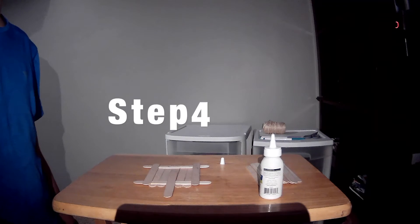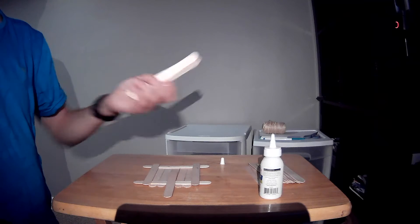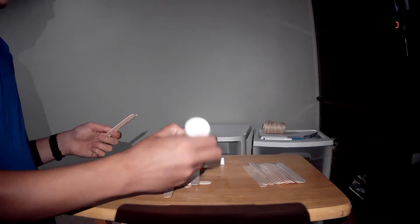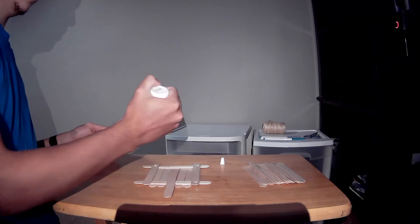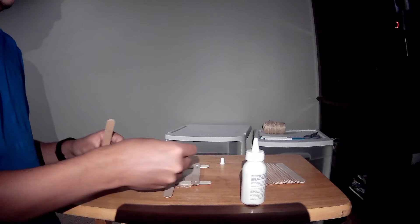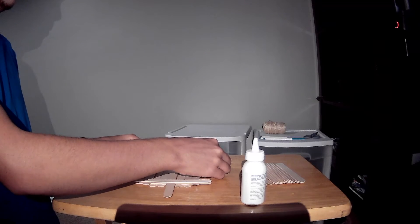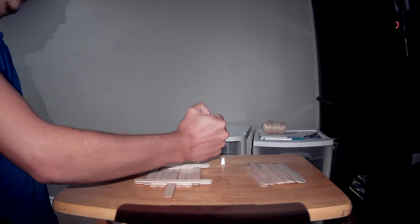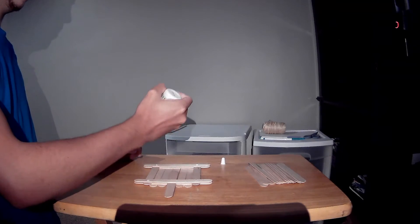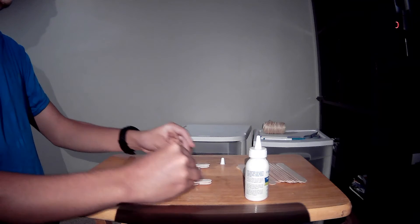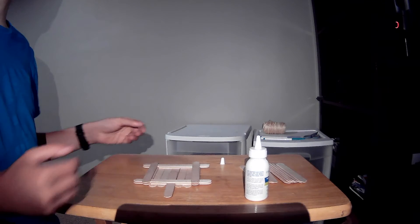Now, step four. Continue gluing the sticks around the outside of the bird feeder, rotating between opposite ends. Stop when you have just four of the popsicle sticks left. So again, do little dabs on the corner, then dots onto these ones. Just like this, and keep going until you have four left.